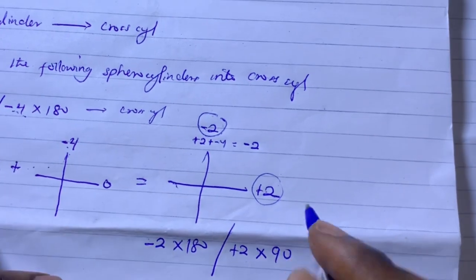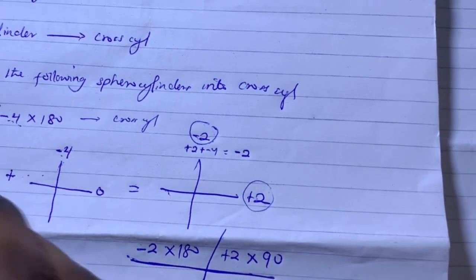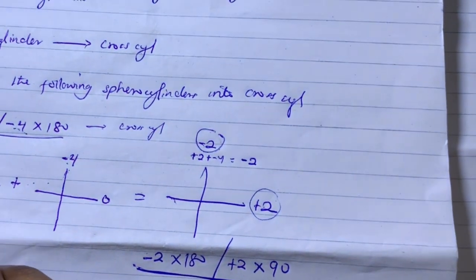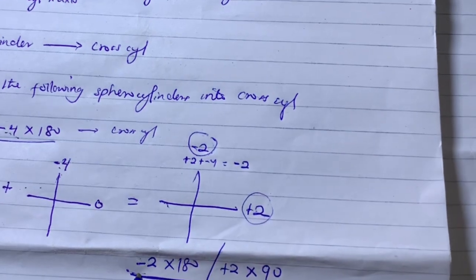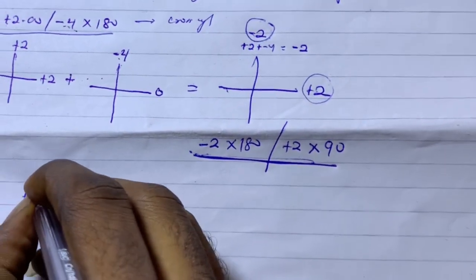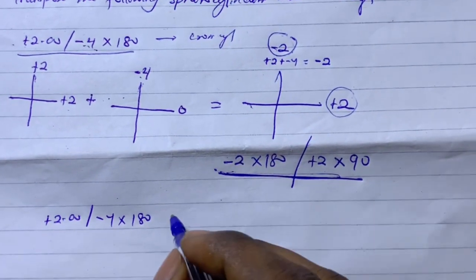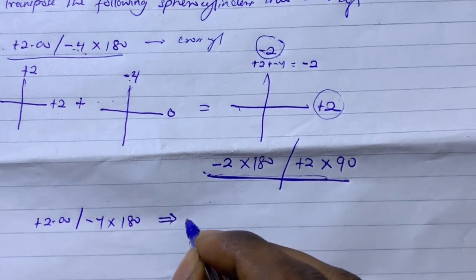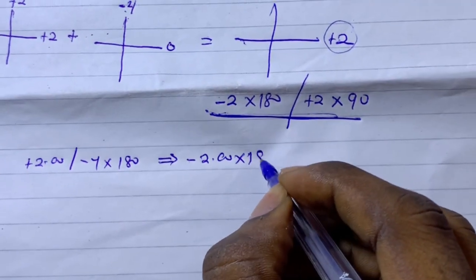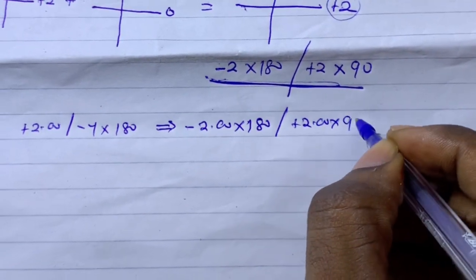Writing each as individual cylinders: minus two has its power along 90, so the axis is perpendicular — axis 180. And plus two has its power along 180, so the axis is at 90. The final answer for transposing this sphero-cylinder into cross cylinders is: minus two axis 180 combined with plus two axis 90.